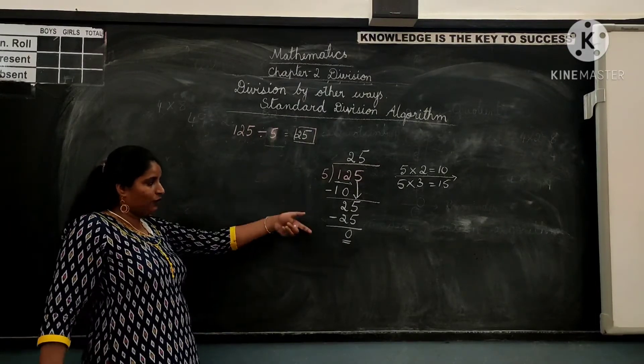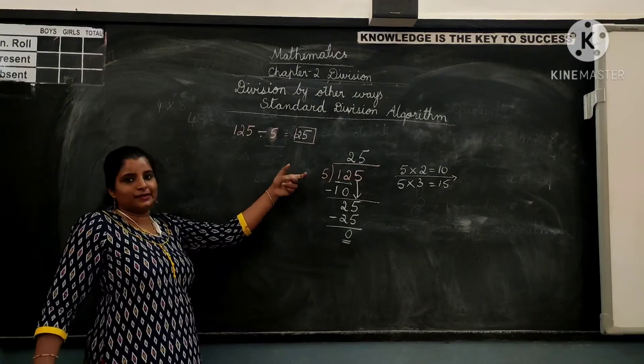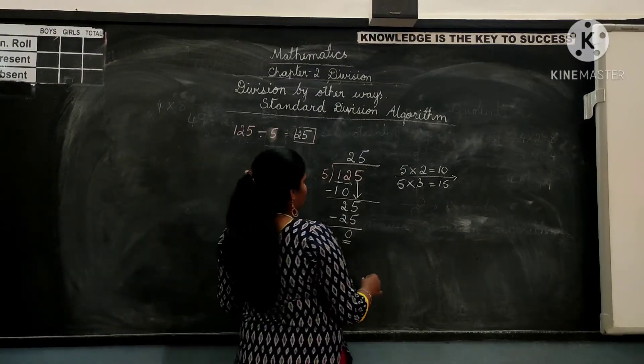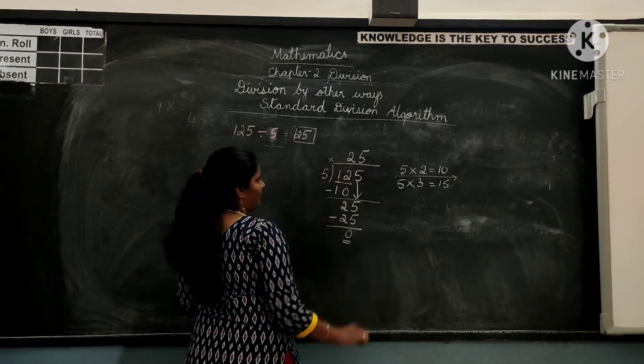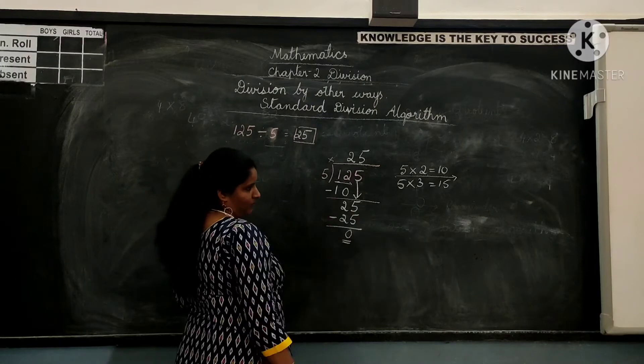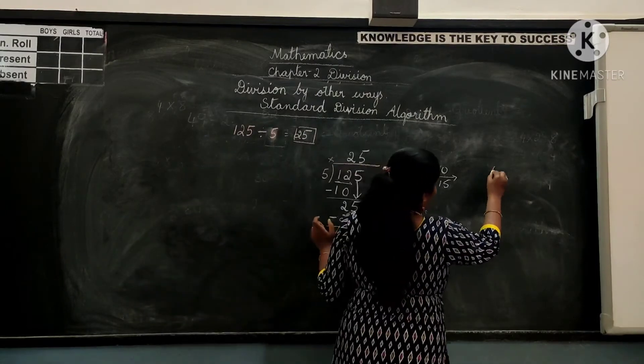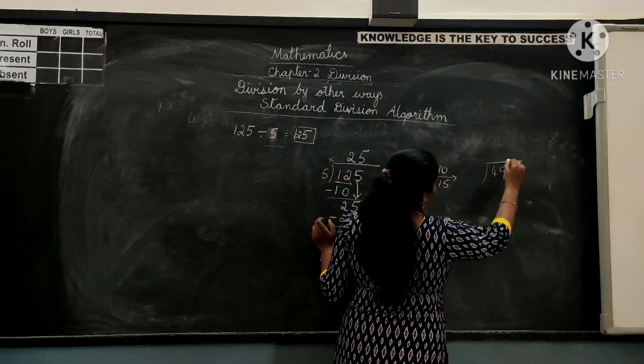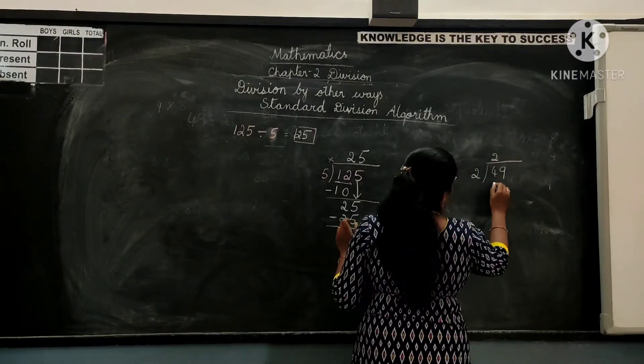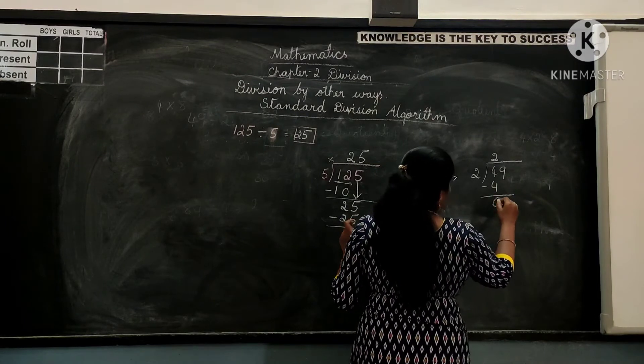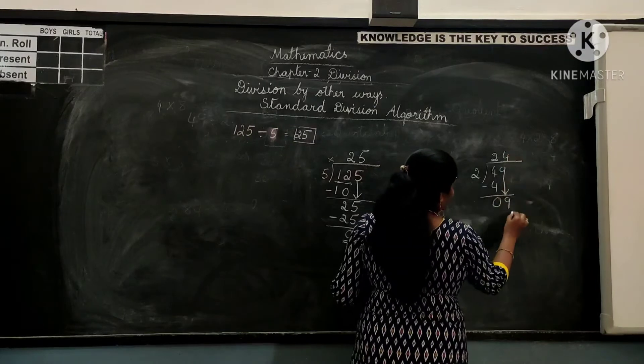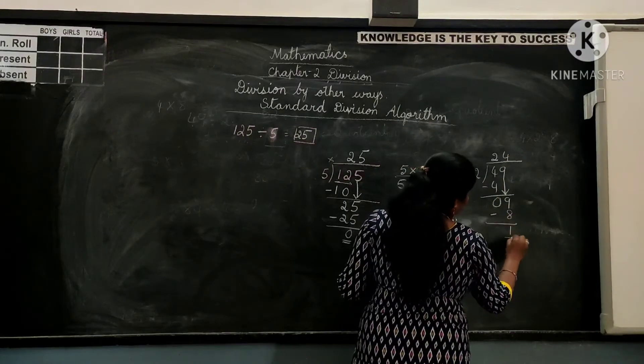If you see, how to cross-check the method is right or wrong. One is we have a method. One thing you can do is that 5 into 25, you see 125. It was 49 by 2. 2 twos are 4, 4 minus 4 is 0. Get 9 down. 4 fours are 8, minus 1.